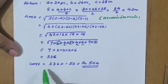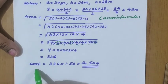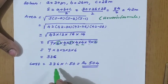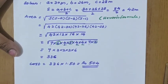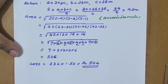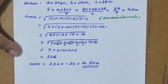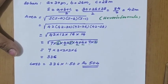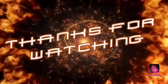The question is not complete yet — total cost must be calculated. 336 into 1.50 gives rupees 504. With this, today's class is winding up. Thank you.